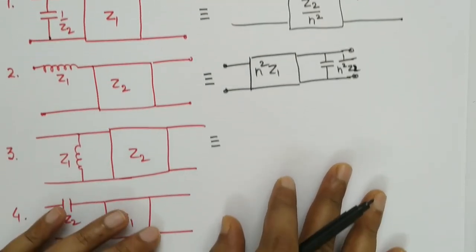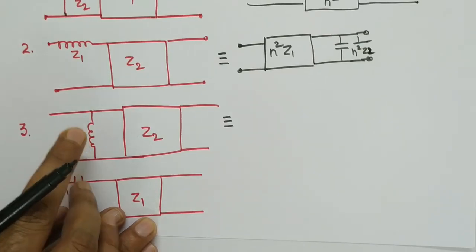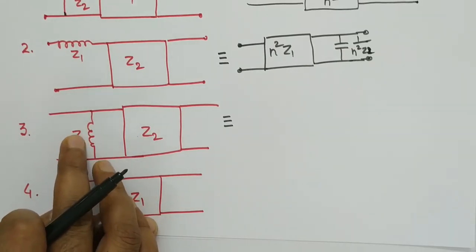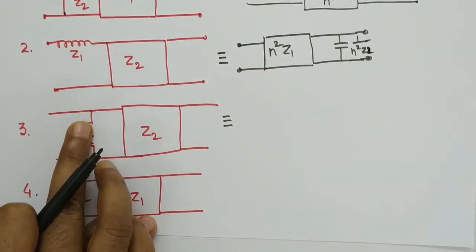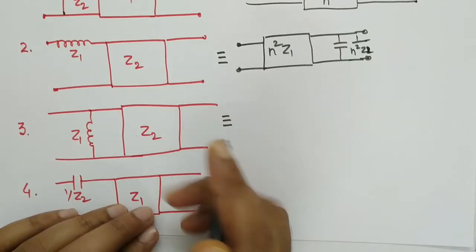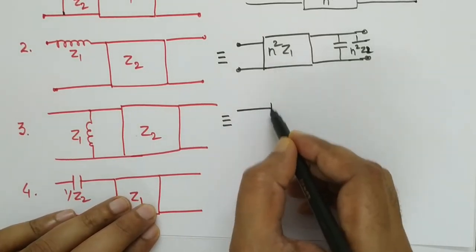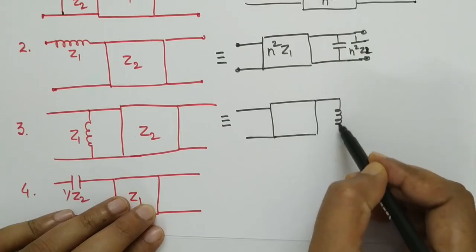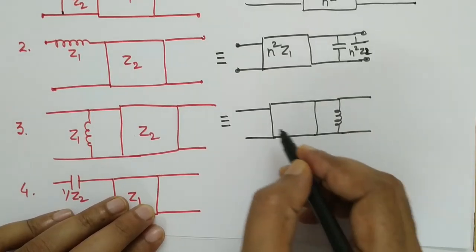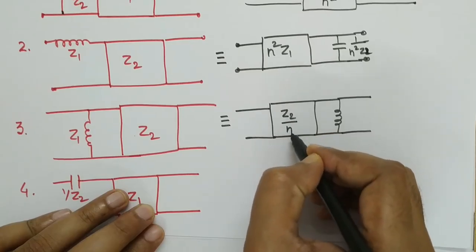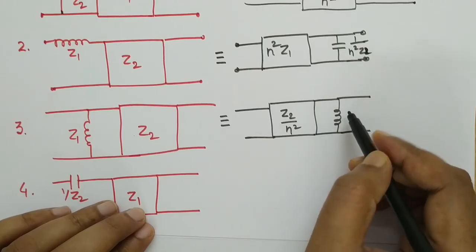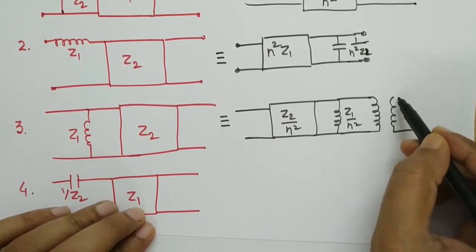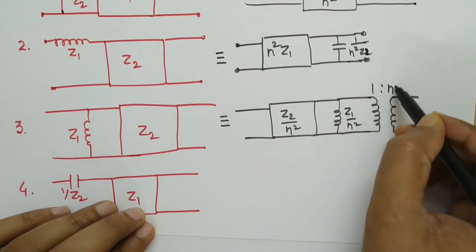The third identity is a different case because the inductor is in shunt, which is not its natural property in series form. So we do not convert it to a capacitor; rather, we just change its position from left to right side. The inductor connects after the transmission line. The transmission line value becomes Z2/N² and the inductor value becomes Z1/N². Additionally, there is a transformer with a turns ratio of 1:N².